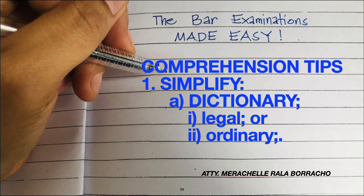There are two types of dictionary — the legal and the ordinary one. For the legal, I have my own Black's Law Dictionary. It was bought by my brother-in-law back in 2009. He personally hand-carried it so that I could have it before I started my first day of law school, and it's still with me. I have the eighth edition. It's really worth the price, although it's pricey — I think it's more than 10,000 pesos at that time because there's no bookstore in the Philippines that sells it.